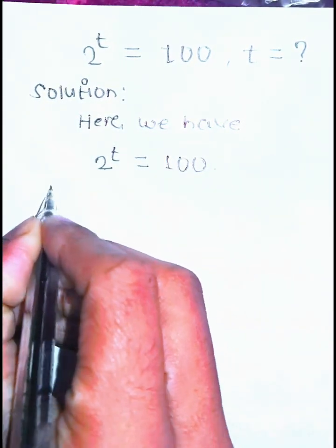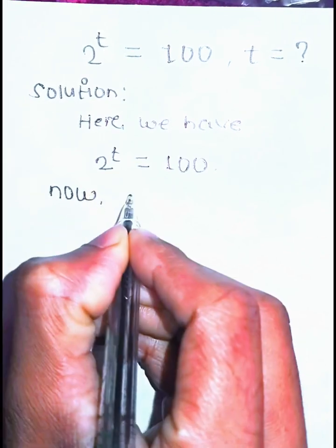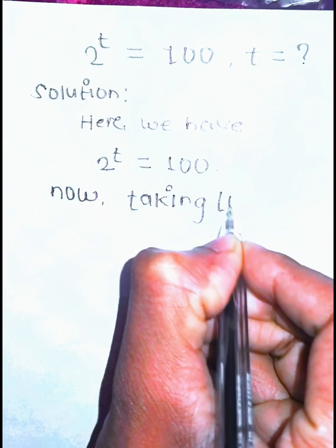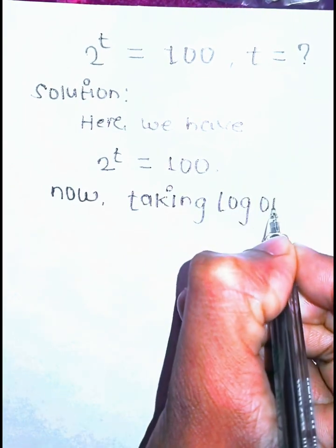The given equation is 2^t = 100. Now, by applying log on both sides, we can find the value of t.